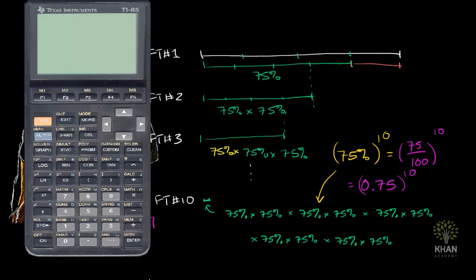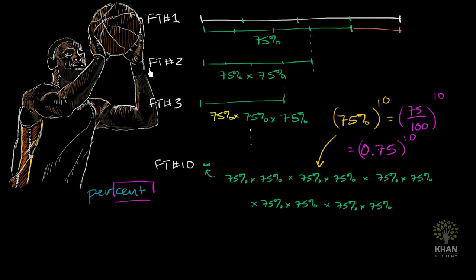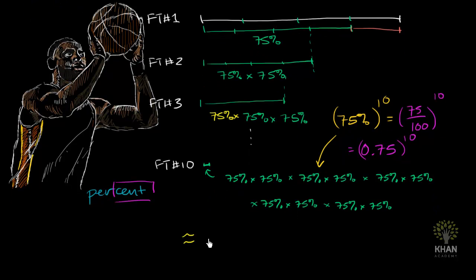Now, let's get our calculator out and see what this evaluates to. So 0.75 to the 10th power gets us to 0.056. And I'll just round to the nearest hundredths. So if we round to the nearest hundredths, it gets us to 0.06, which is equal to roughly a 6% probability of making 10 free throws in a row. Which even though you have quite a high free throw percentage, this is not that high of a probability. It's a little bit better than a 1 in 20 chance.